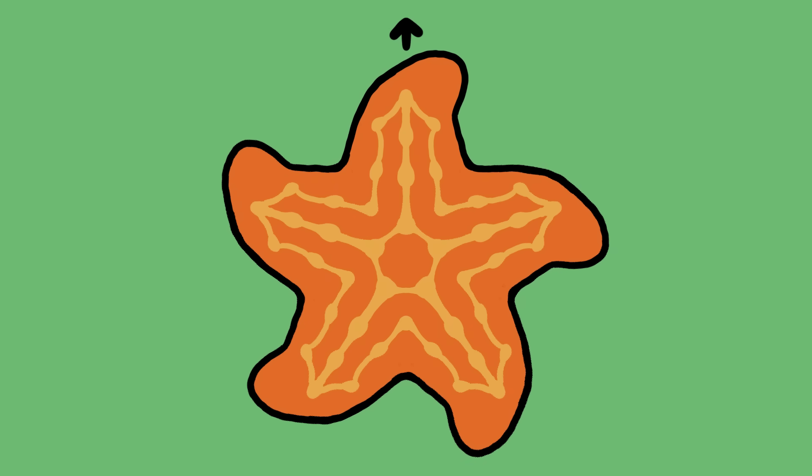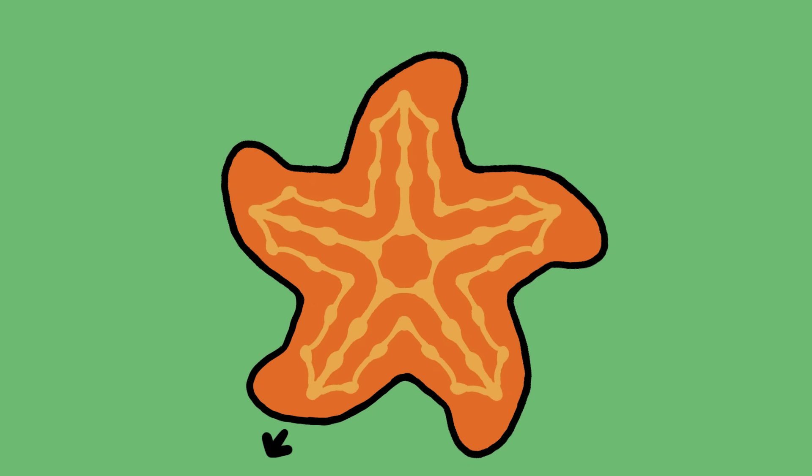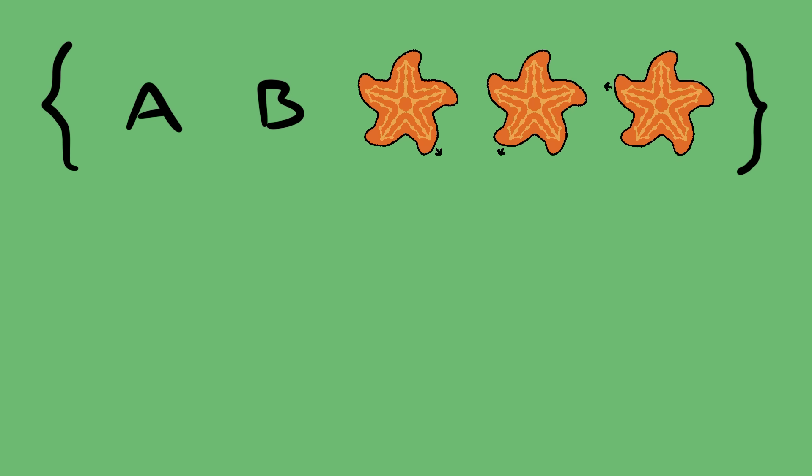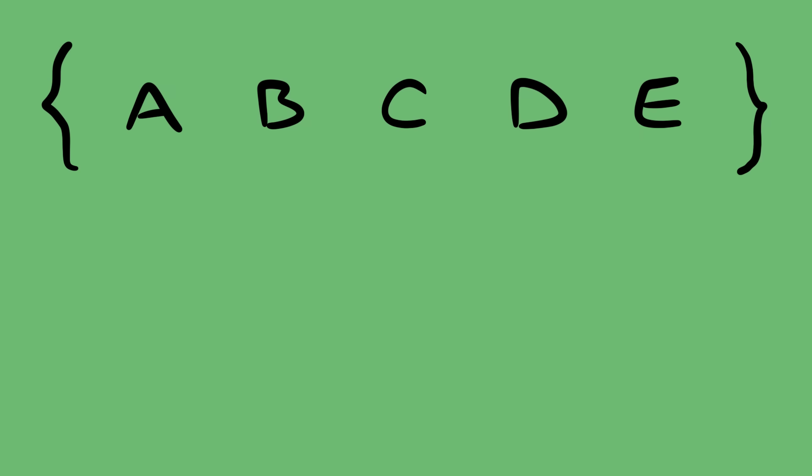There are five unique positions we can move the sea star to that leave it looking the same. This makes a set of five positions, and for convenience we'll label them A to E. Now consider an operation that combines two positions one after the next. We'll call it composition.